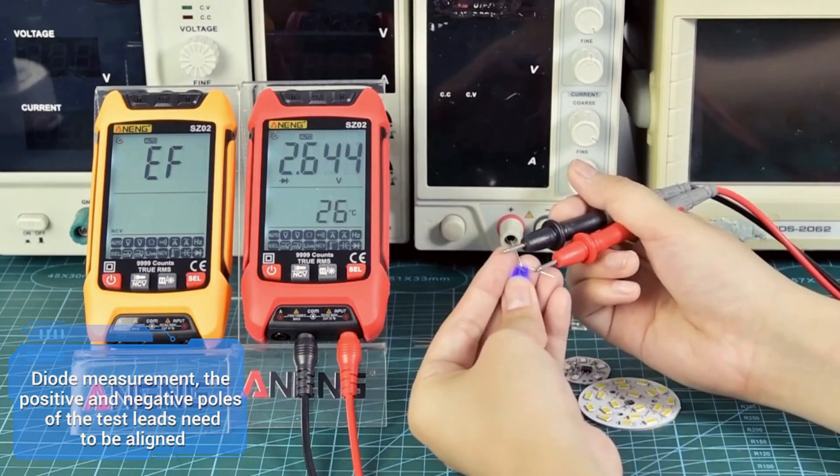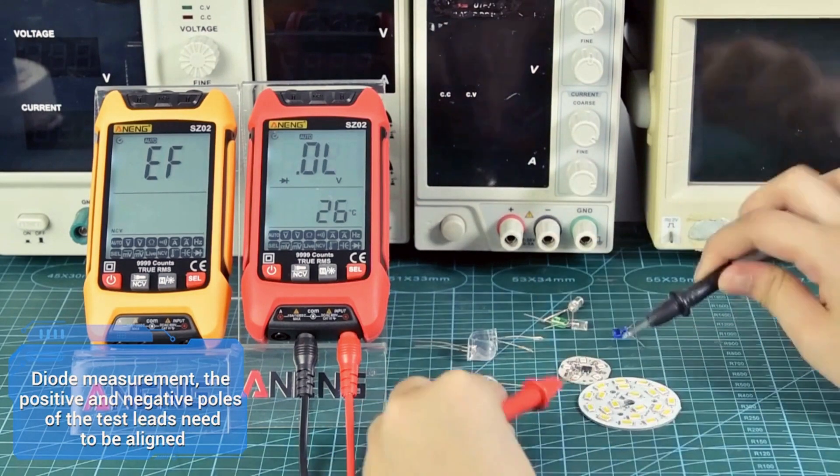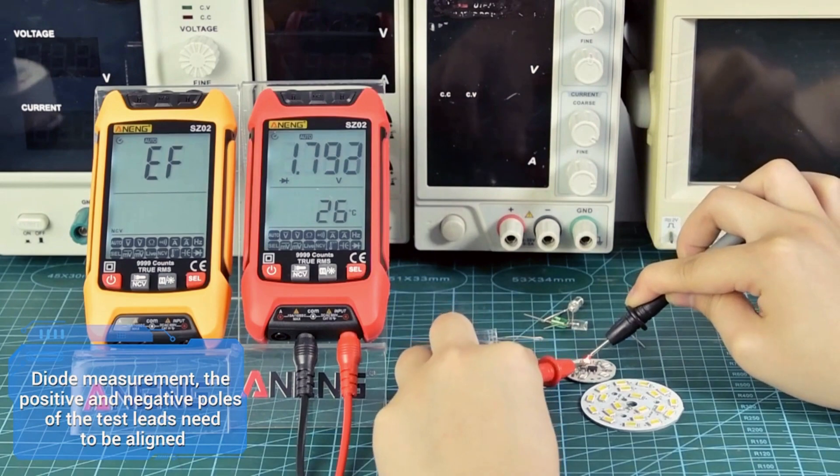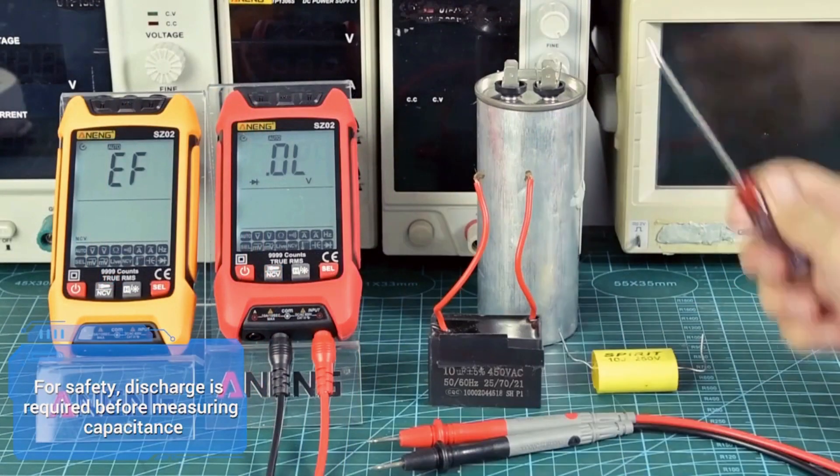Overall, the ANENGS Z2 is a reliable and convenient digital multimeter suitable for both professional electricians and DIY enthusiasts.